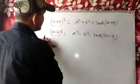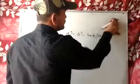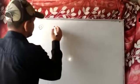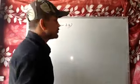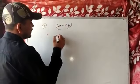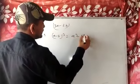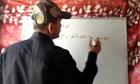Now I will start exercise 4b. Question number 1: you have to find the cube of 3a minus 2b. So first of all I will write the formula: a minus b whole cube is equal to a cube minus b cube minus 3ab into a minus b.